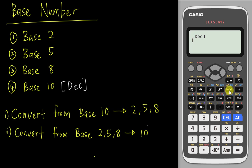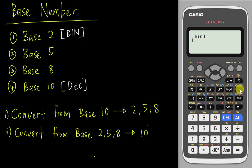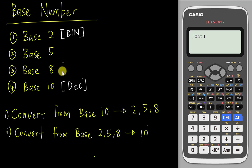Base 2 in this calculator is binary — 'BIN.' If I select it you should be able to see BIN on screen. We don't have base 5 in this calculator, but we do have base 8, which is 'OCT.'